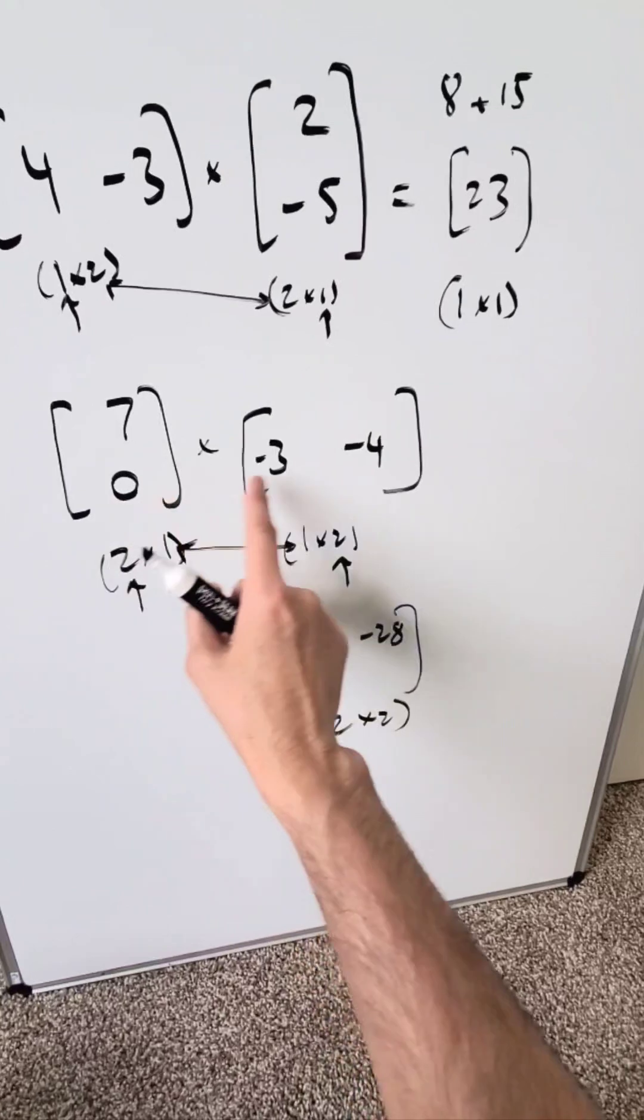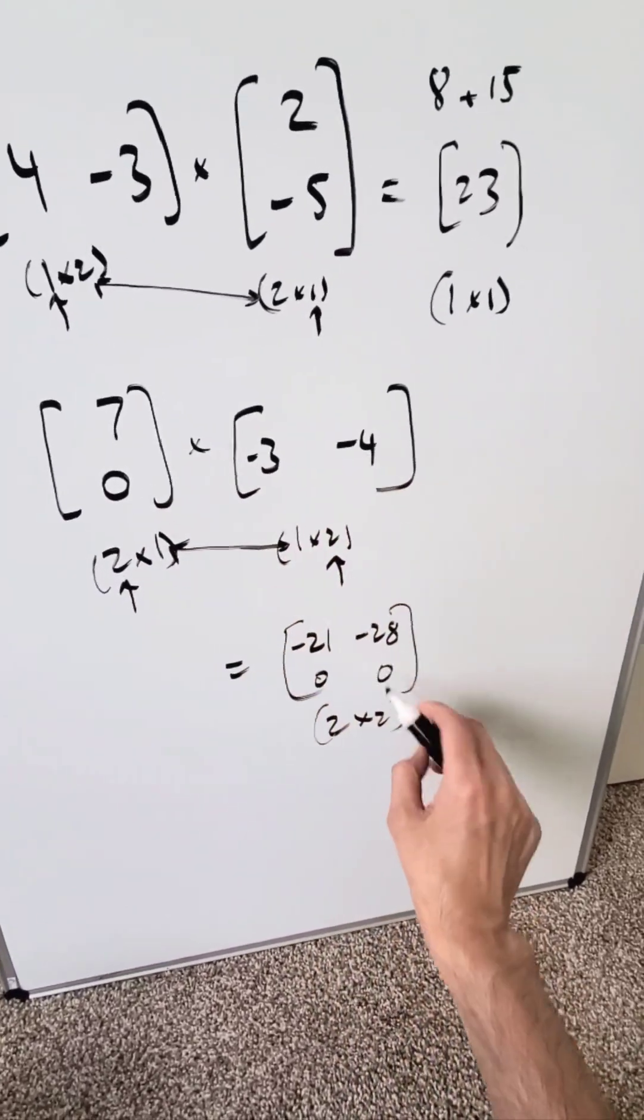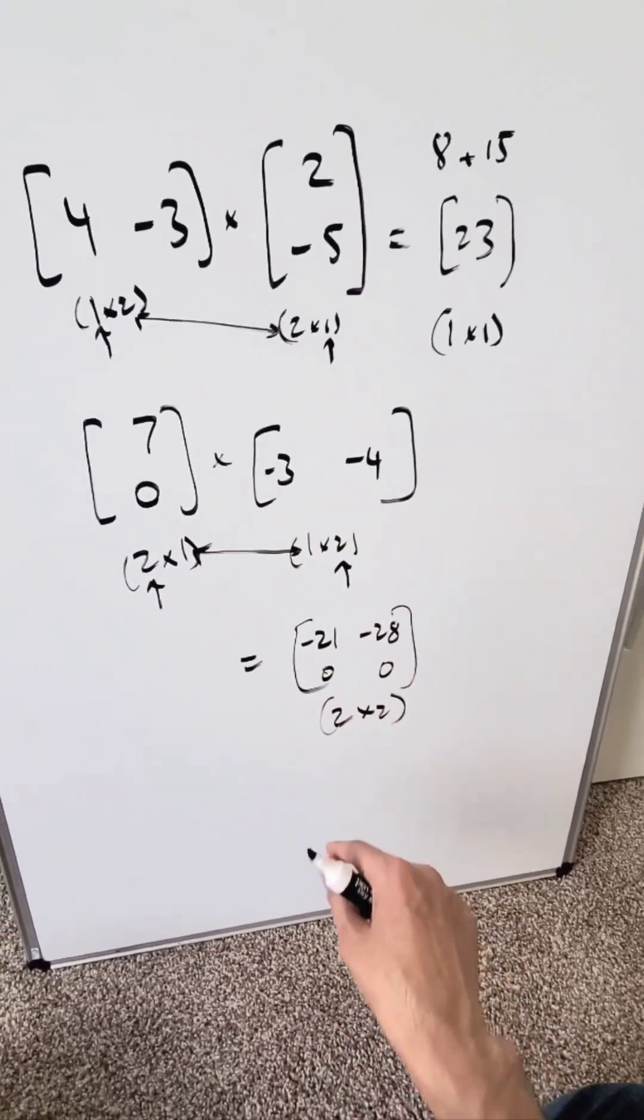0 times minus 3, 0. 0 times minus 4, 0. And that right there is your end result. That's all.